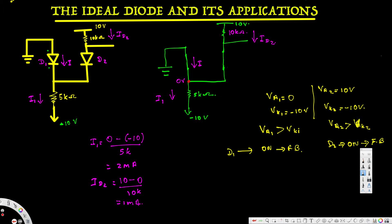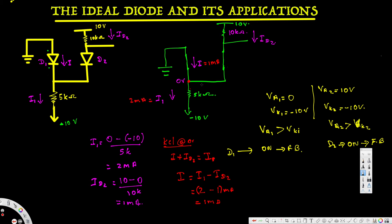Now we want to find I. To do so, we apply KCL at the zero-volt node. I and Id2 are both entering the node, while I1 is exiting. So KCL says: I + Id2 = I1. Therefore I is equal to I1 minus Id2, which is 2 milliamps minus 1 milliamp, giving us I = 1 milliamp.